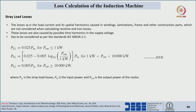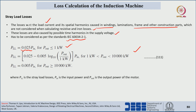Stray load losses are the losses not accounted for by stator copper losses, core losses, and mechanical losses. They include losses due to load currents and their spatial harmonics caused in windings, laminations, frame, and other constructional parts. These losses are also caused by time harmonics from the supply voltage and must be considered per IEC standards. For machines rated below 1 kW, stray load losses are 2.5% of input power.